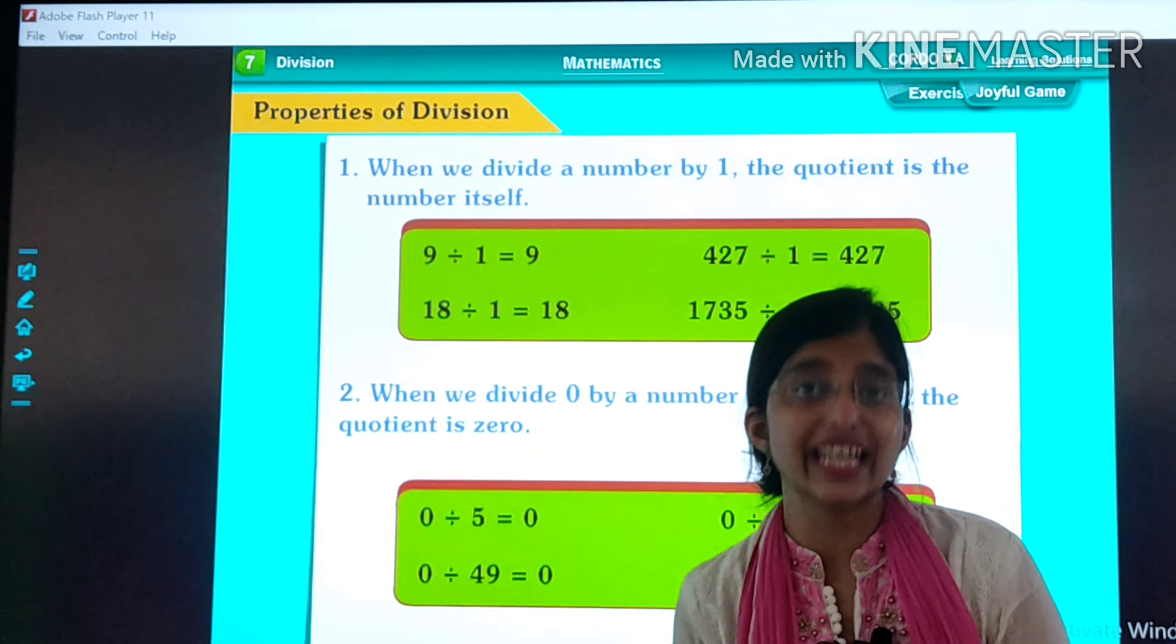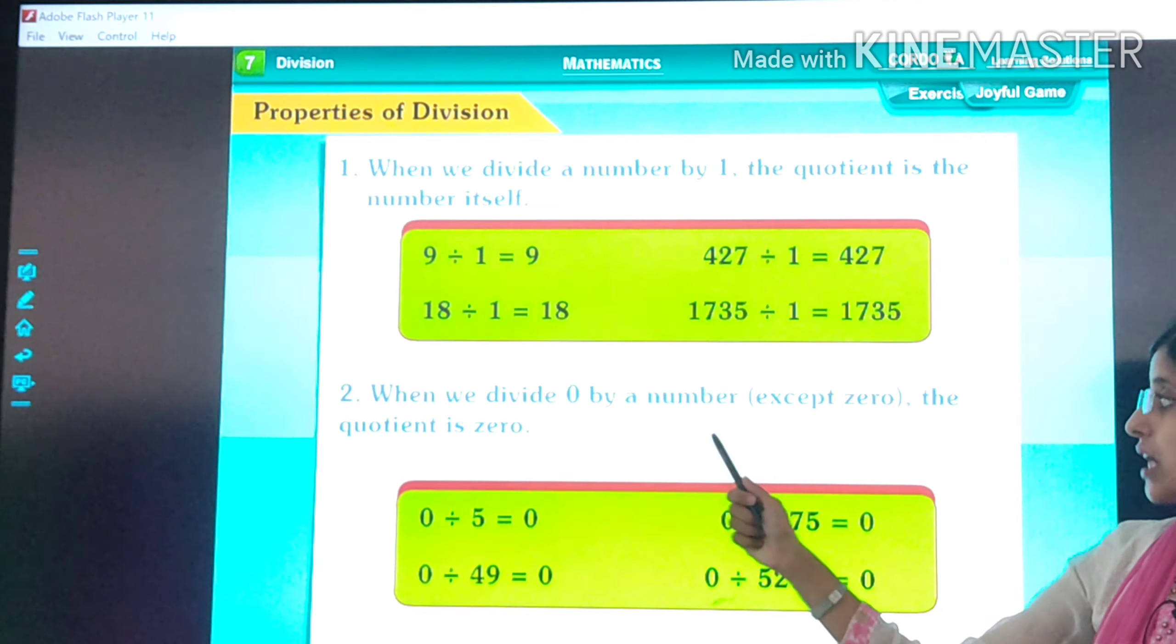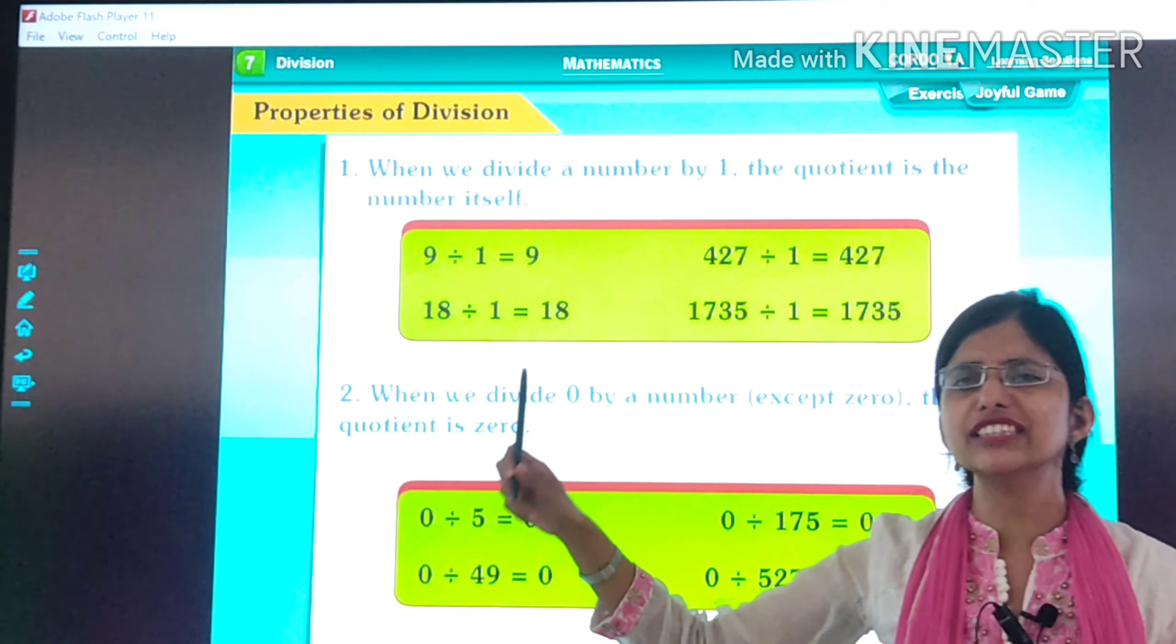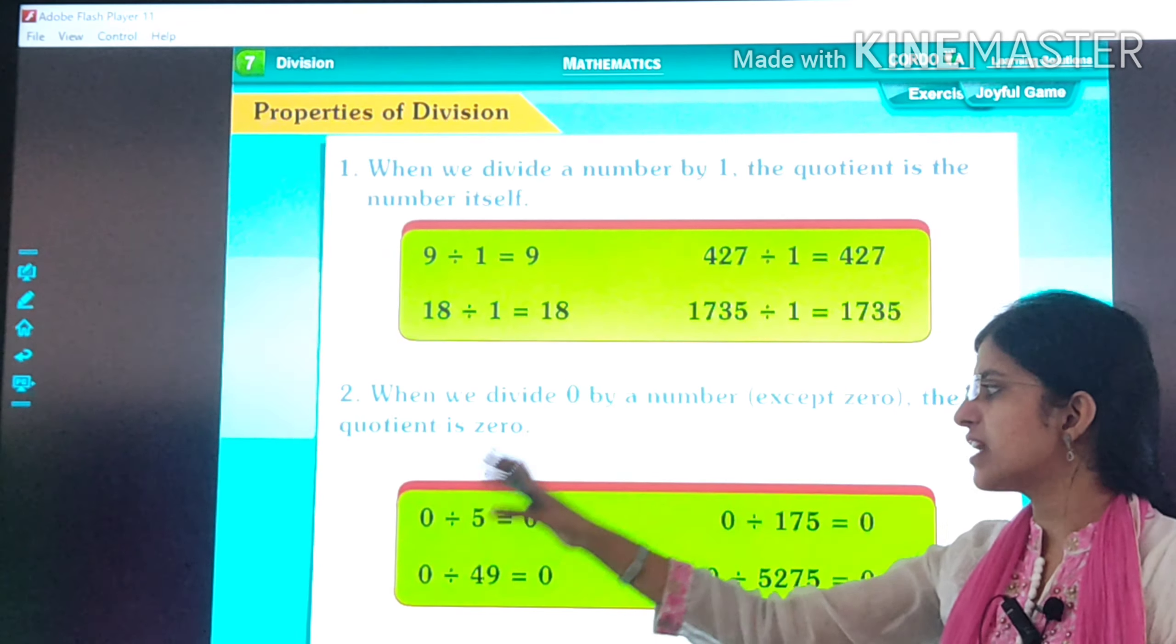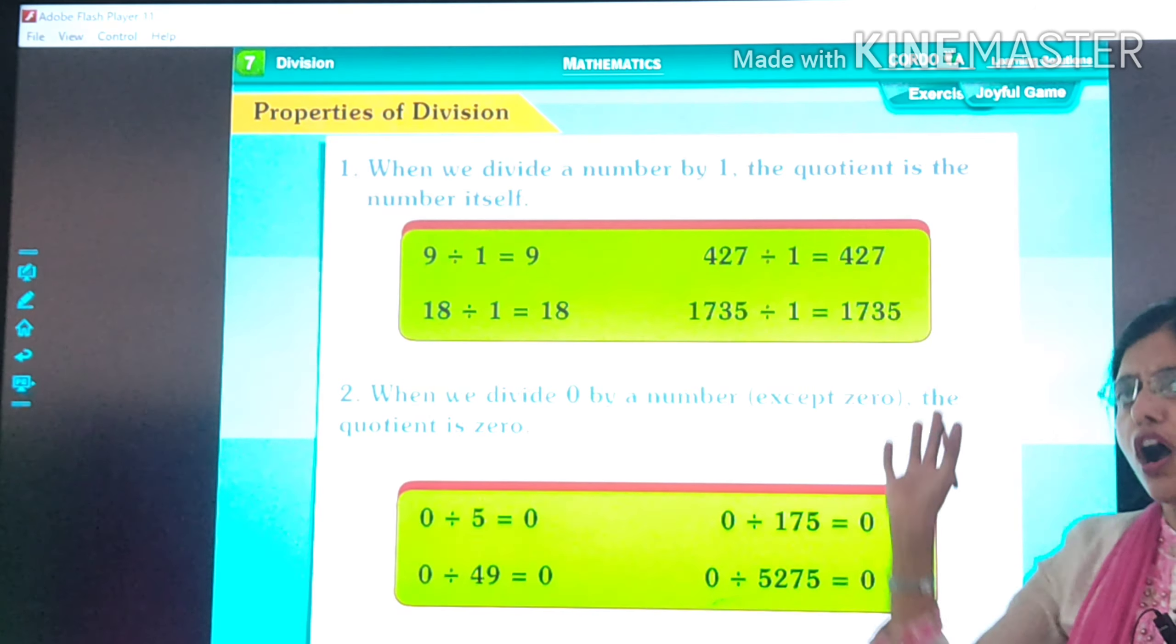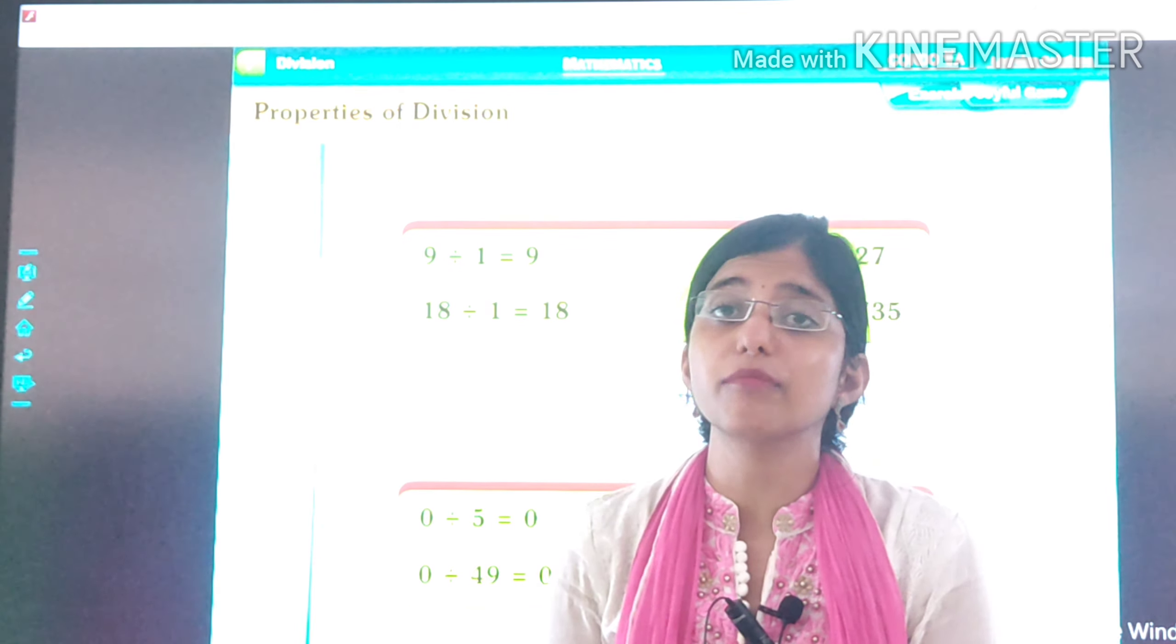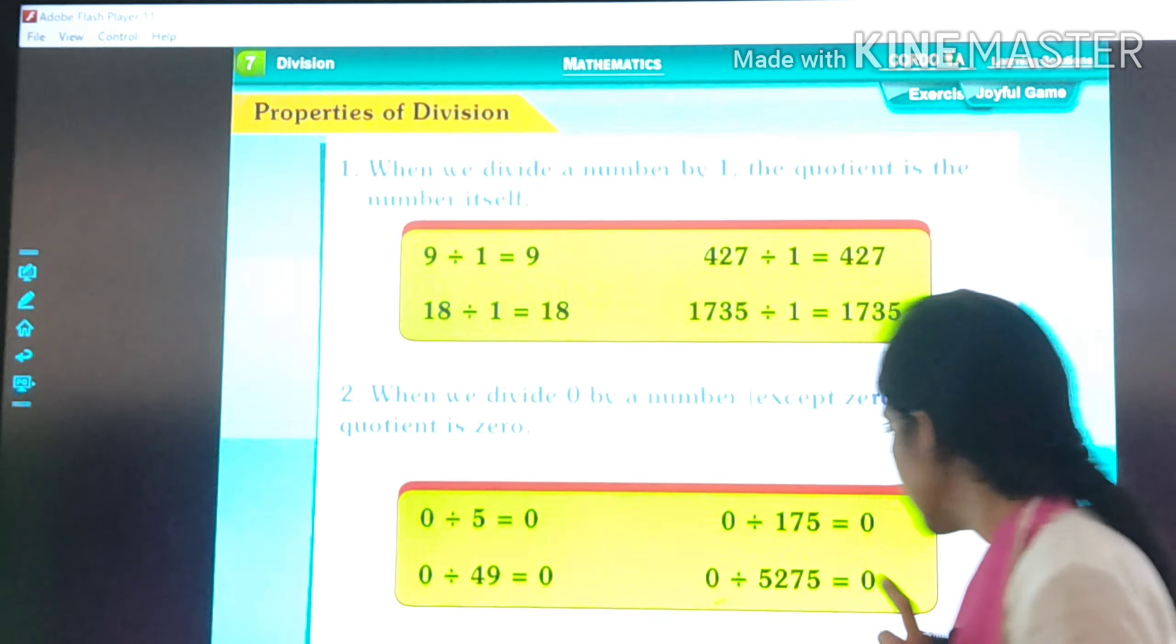Now comes our second property. When we divide 0 by a number, the quotient is 0. 0 divided by 5 is 0. 0 divided by 175 is 0. If we divide 0 by any number, we always get answer 0. Let's see how.